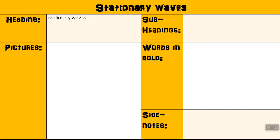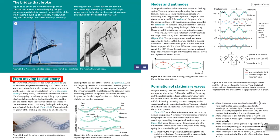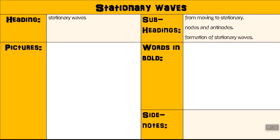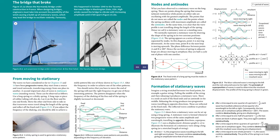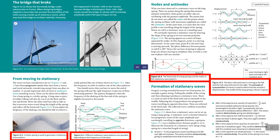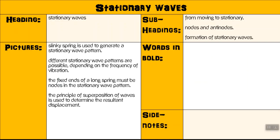So firstly, we know that the heading is stationary waves. Let's look for any subheadings — we see there's 'moving from moving to stationary,' 'nodes and antinodes,' and 'formation of stationary waves,' and we'll write that in. Next, we'll be looking at pictures — there are four figures there, and we'll write down the information.